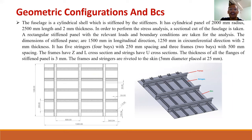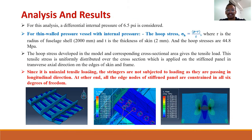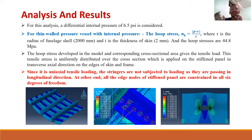In order to perform the stress analysis, a sectional cut of the fuselage is taken and a rectangular stiffened panel with driven loads and boundary conditions is applied for the analysis. This is the geometric configuration of the stiffened panel. For this analysis, a uniaxial loading and a differential internal pressure of 6.5 psi is considered, from which the corresponding hoop stress developed in the model is calculated. With the help of hoop stress, we can determine the tensile load, and the tensile load is applied on the cross section of the stiffened panel in the transverse axial direction on the edge of the skin frame.